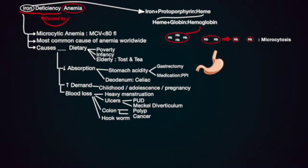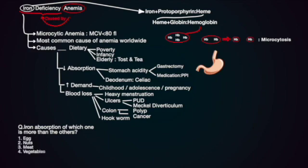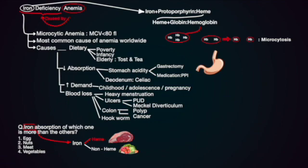Here is the diagram of iron deficiency anemia with questions for recapping the causes. Question 1: Iron absorption of which one is greater than the others? 1. Egg, 2. Nuts, 3. Meat, 4. Vegetables. There are two types of iron: heme and non-heme. Heme iron comes from meat products and non-heme comes from vegetables. Heme iron from meat products is better absorbed than non-heme. So the correct answer is option 3.